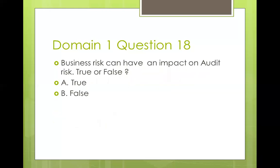Question eighteen: business risk can have an impact on auditor's opinion — true or false? Business risk is any event that can prevent an organization from achieving its business objectives. For example, COVID-19 is a business risk affecting businesses worldwide. Consider an organization holding inventory that was not selling during COVID-19 — there is a risk of obsolescence requiring a write-down under IAS 2. If auditors do not query the decision not to write down inventory, the audit report will be faulty. So business risk can indeed impact the quality of the audit report. The answer is true.